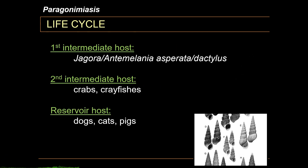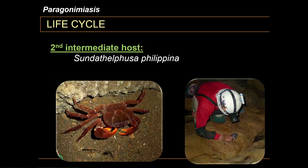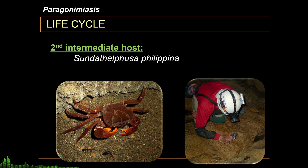As with most trematodes, please take note that Paragonimus has two intermediate hosts to complete its life cycle. The first intermediate host would be small freshwater snails of the genus Jagora or Antimelania. The second intermediate host would include crabs and crayfishes. The more common second intermediate host is the riverine crab called Sunda Telfusa Filipina, a very small crab that fits on the palm of your hand.